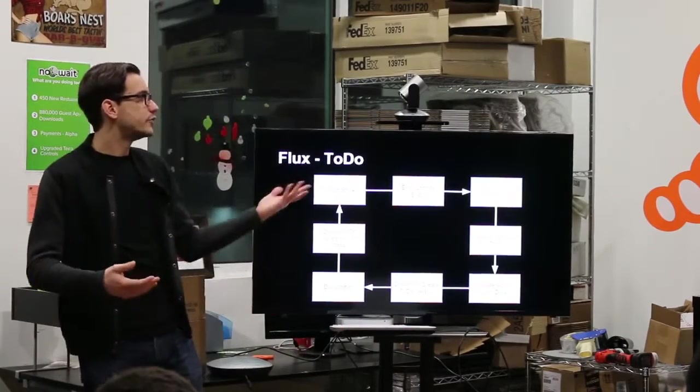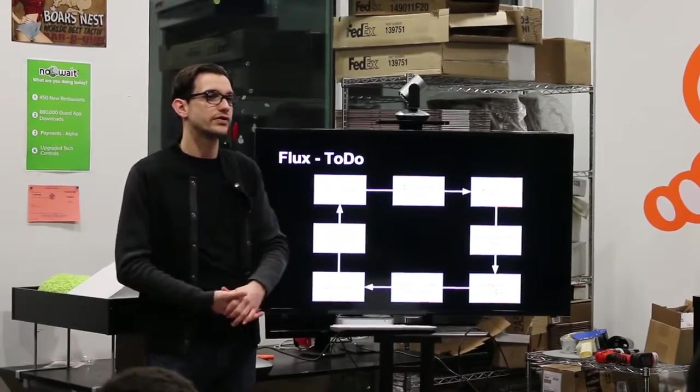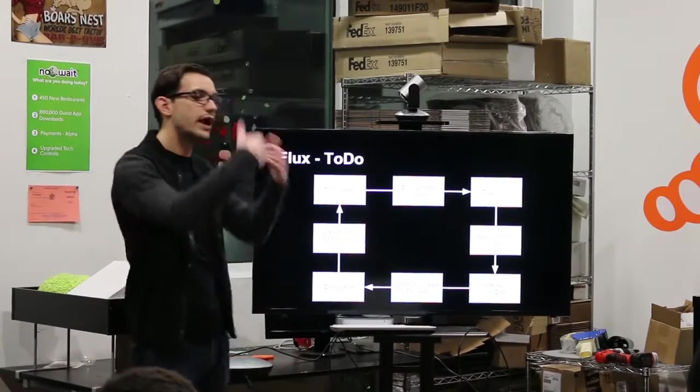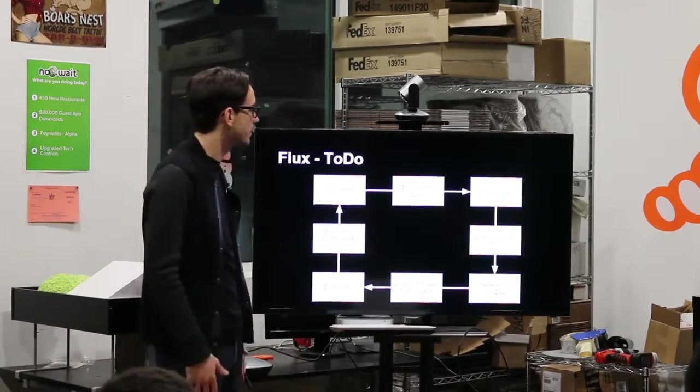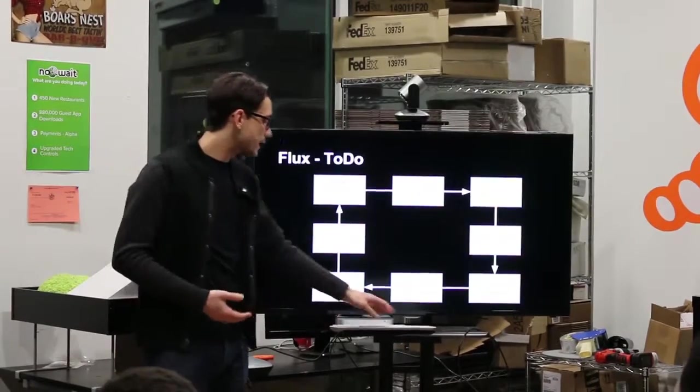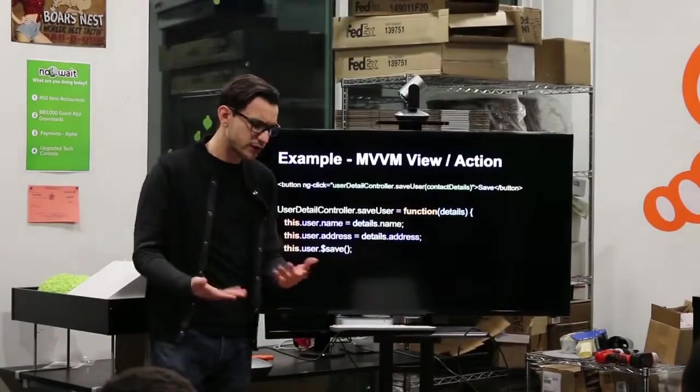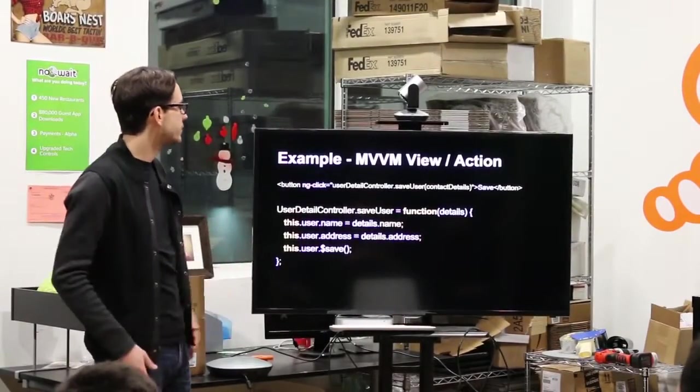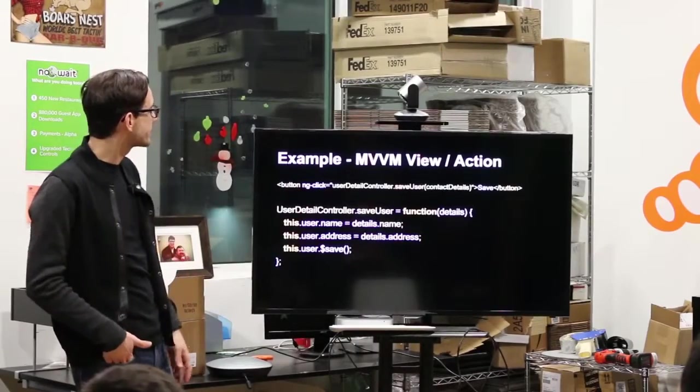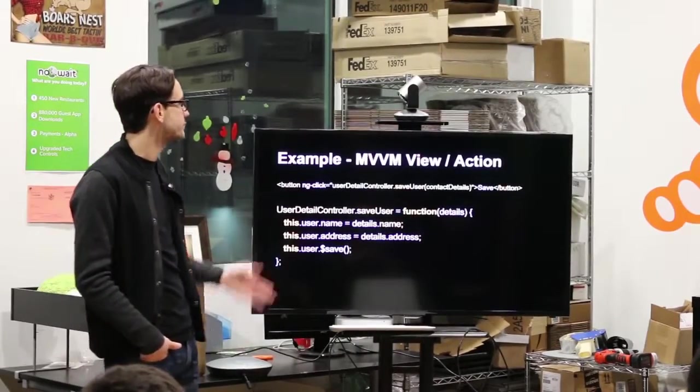It emits that event, and then the To Do view gets that new To Do list and updates itself, and then you have in your list that new To Do. That is the long way of how it goes. If we were looking at it in a more coding, code way, this is almost Angular code that took some shortcuts.